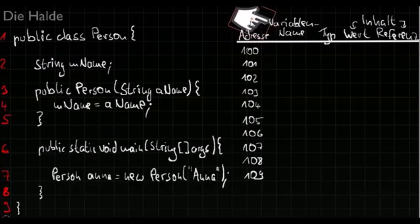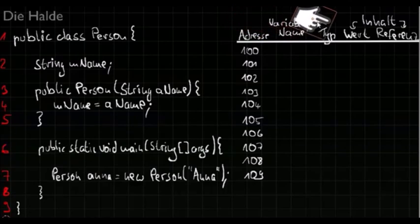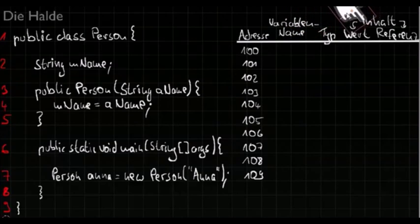We have also another column where we will enter variable names, if we know them, because not every object has a name. Furthermore, I will put the type of a specific variable in this column. And the last column over here will be used to enter the content of a variable.